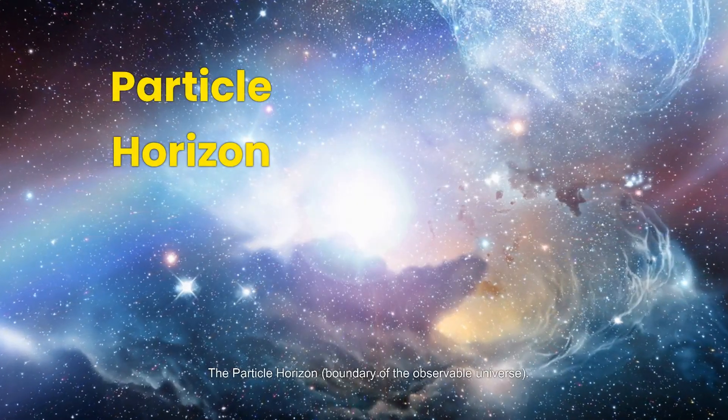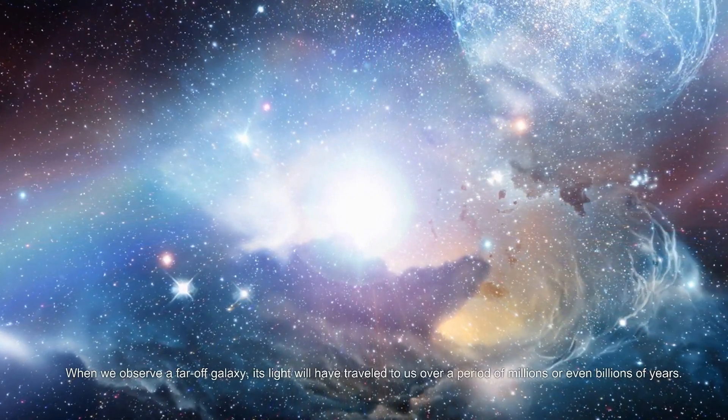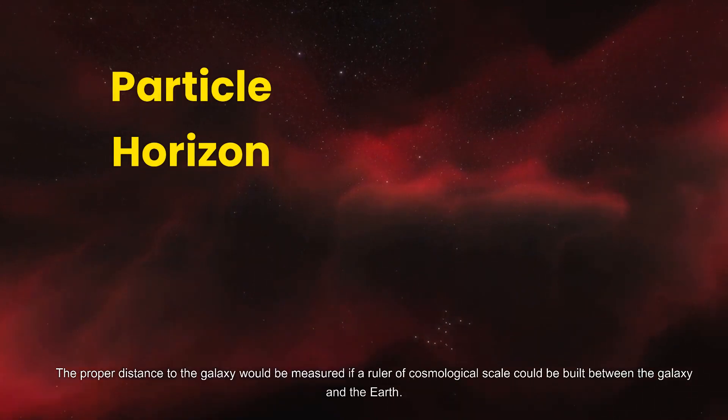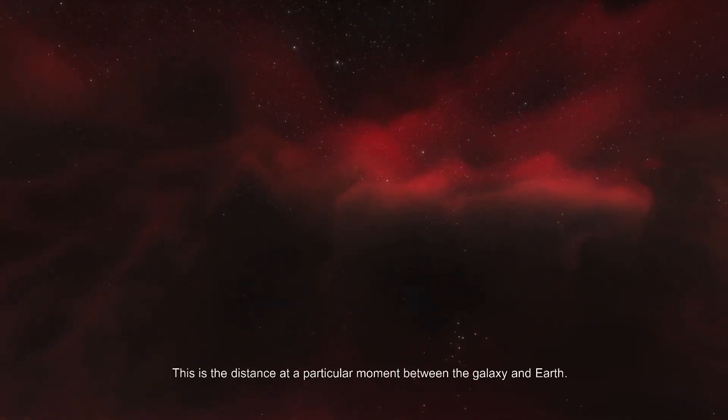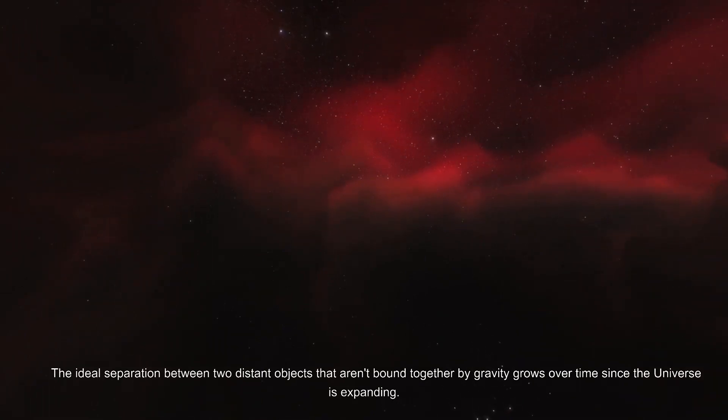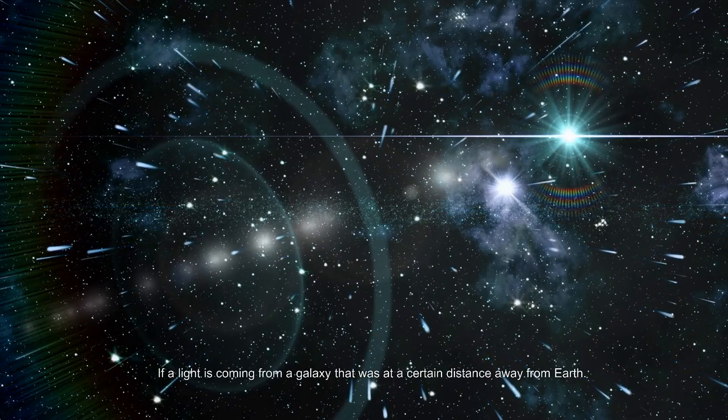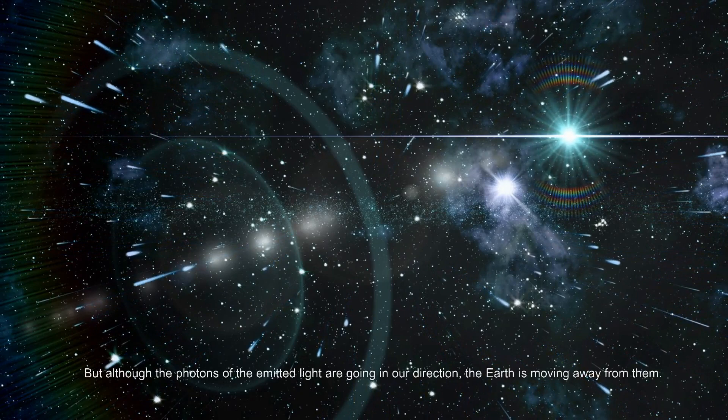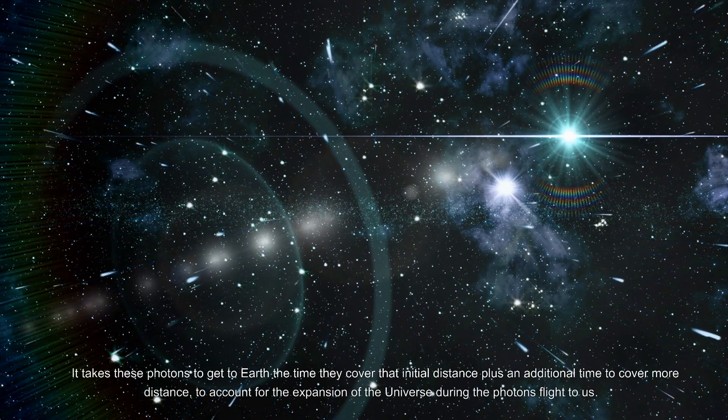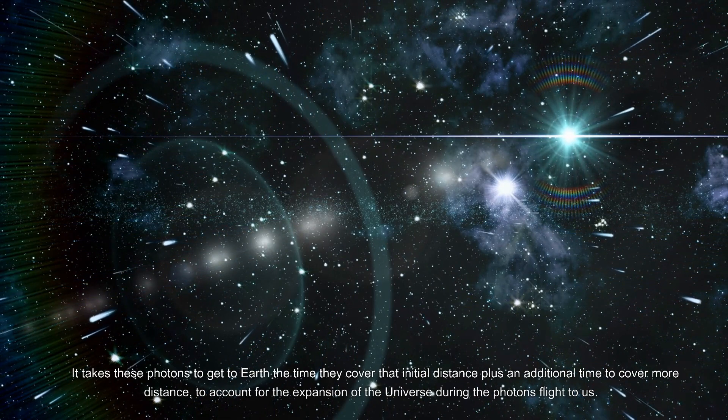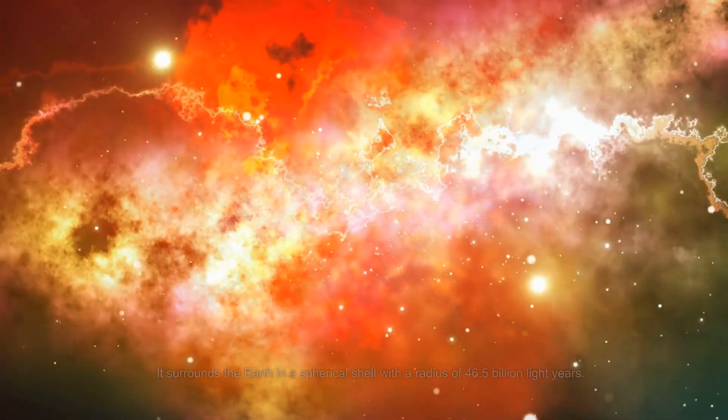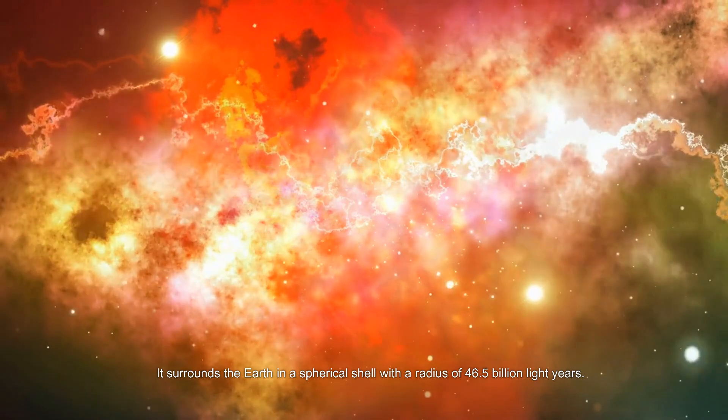The particle horizon is the boundary of the observable universe. When we observe a far-off galaxy, its light will have traveled to us over millions or even billions of years. The proper distance to the galaxy would be measured if a ruler of cosmological scale could be built between the galaxy and Earth. Since the universe is expanding, if light is coming from a galaxy that was at a certain distance away from Earth, although the photons are going in our direction, the Earth is moving away from them. The particle horizon is the theoretical maximum appropriate distance that we can now observe. It surrounds the Earth in a spherical shell with a radius of 46.5 billion light years.